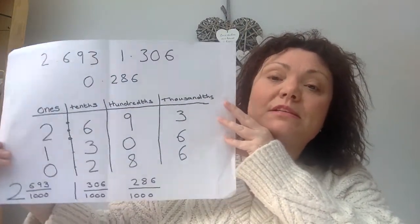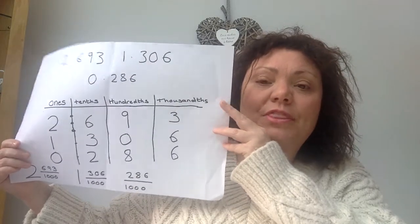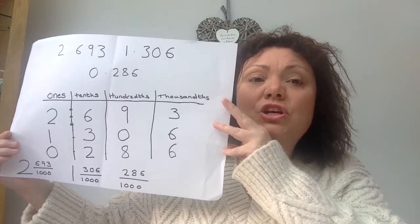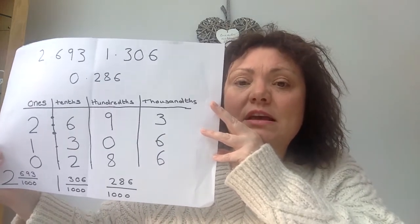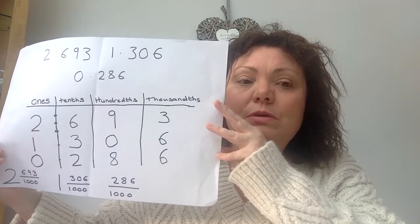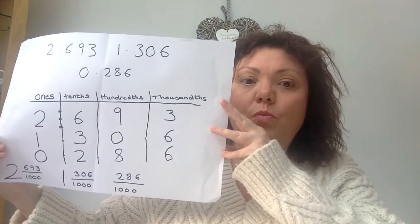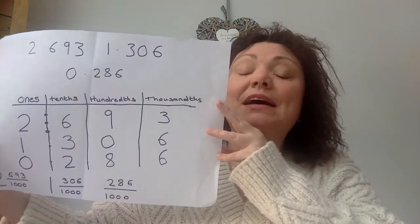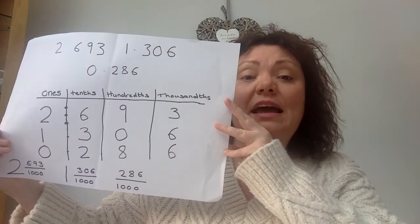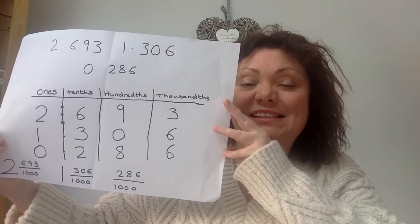Next — well, not next week because it's half term, but the week after — we're going to be looking at decimals and fractions. At the bottom here, I've just shown you what these would be as a fraction, to link all these ideas together. So we've got two wholes and then six hundred and ninety-three thousandths — a mixed number. Then 1.306 gives us one whole number and three hundred and six thousandths; remember that zero has to stay in for the hundredths column. And 0.286 — no wholes — is two hundred and eighty-six thousandths.